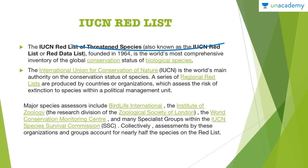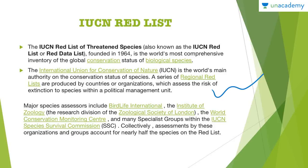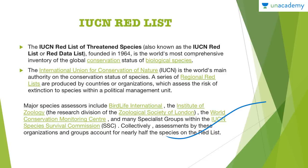Now let us talk in detail about the IUCN Red List. The IUCN Red List of Threatened Species, also known as the IUCN Red List, was founded in 1964 and is the world's most comprehensive inventory of the global conservation status of biological species. The IUCN is the world's main authority on the conservation status of species. A series of regional red lists are produced by countries or organizations which assess the risk of extinction to species within a political management unit. Major species assessors include BirdLife International and the Institute of Zoology based in London.